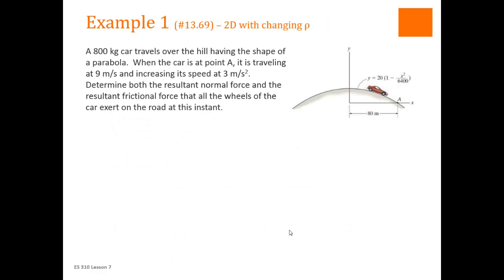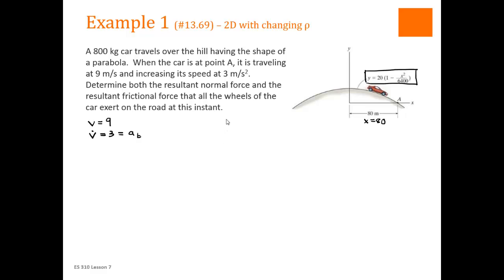Let's take an example — a 2D example with a changing rho, where we're given the equation for the path. That's the hint we'll be using NT coordinates. We have a car going over a hill, and we have an equation for that hill. When the car is at point A, x equals 80. The speed V equals 9, and the speed is increasing at 3 meters per second squared — so we already know a_t equals v-dot equals 3. We need to determine both the resultant normal force and the resultant frictional force that all the wheels exert on the road at this instant. The normal force is in the n direction; the frictional force will be in the t direction.